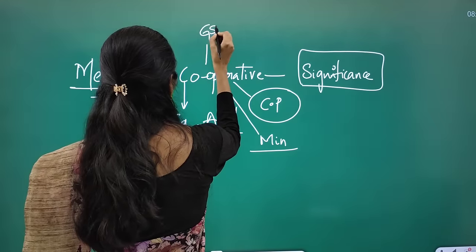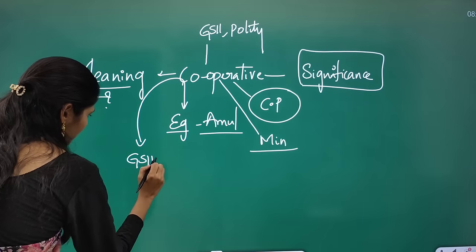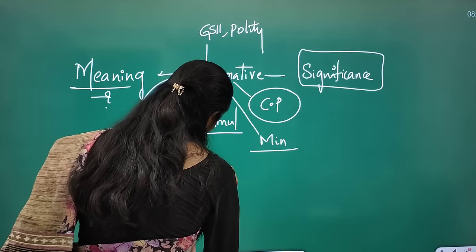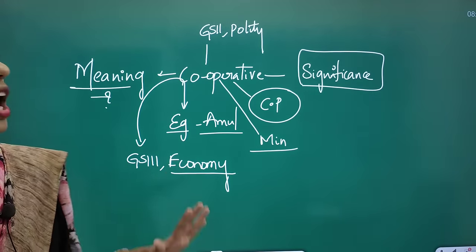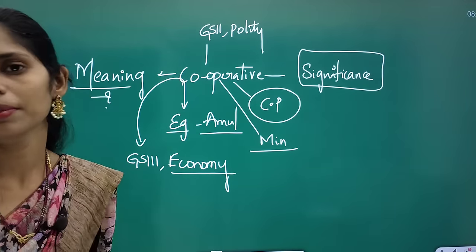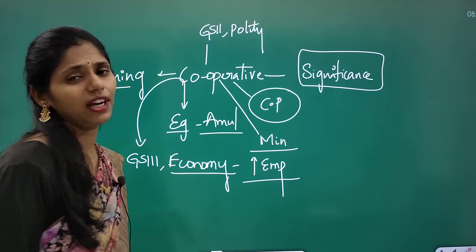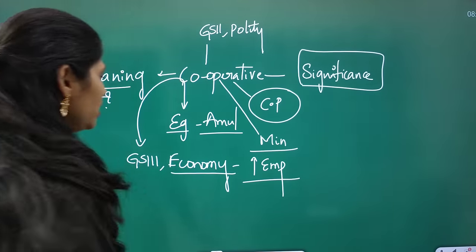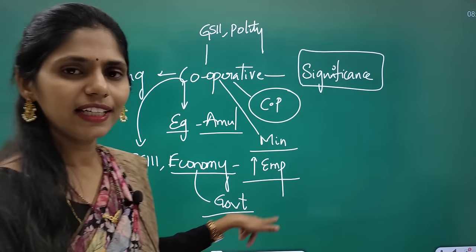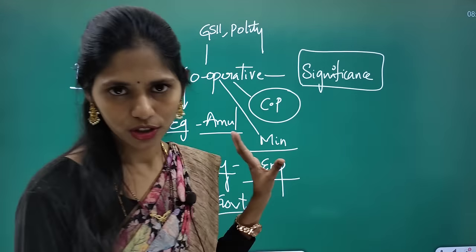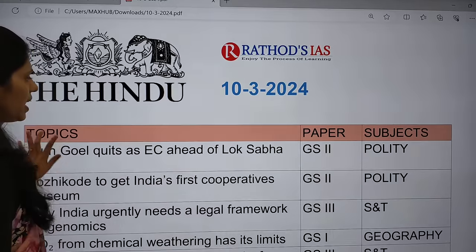You have to know the constitutional provisions talking about cooperatives, and also about the Ministry of Cooperatives. You should also see the significance — what are the advantages of forming a cooperative society. This topic is especially important from GS Paper 2 under polity and governance. We can also connect this with GS Paper 3 under economy — how cooperative societies improve the economy, lead to economic growth, generate employment, and benefit from government schemes.